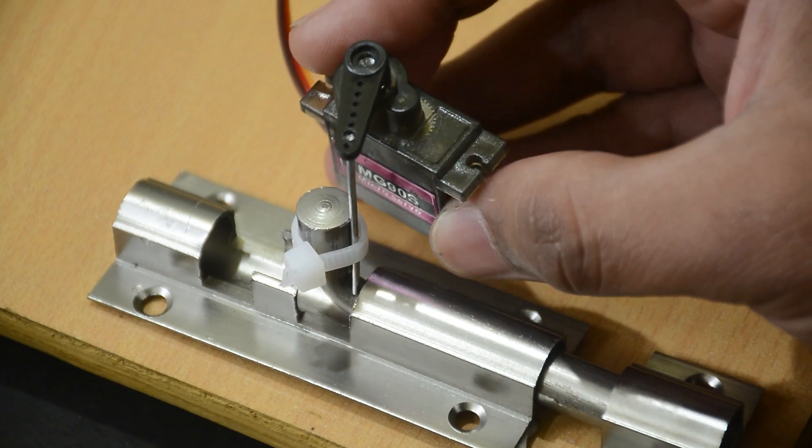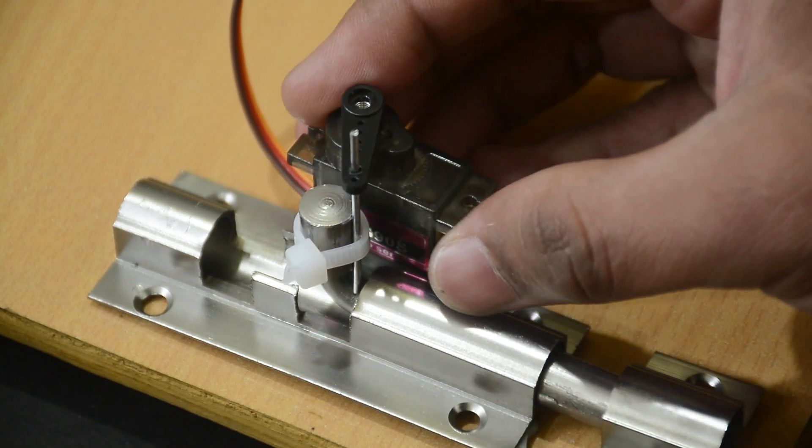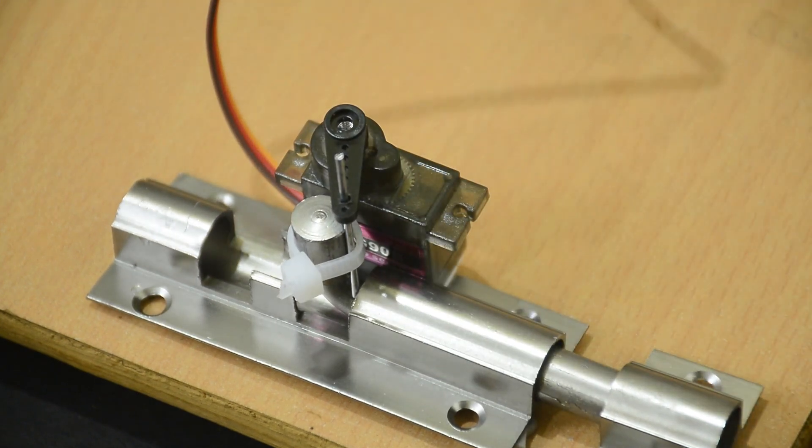Insert the servo motor's arm into the pin like this and place it. Make sure that the arm is at the zero position of the motor.